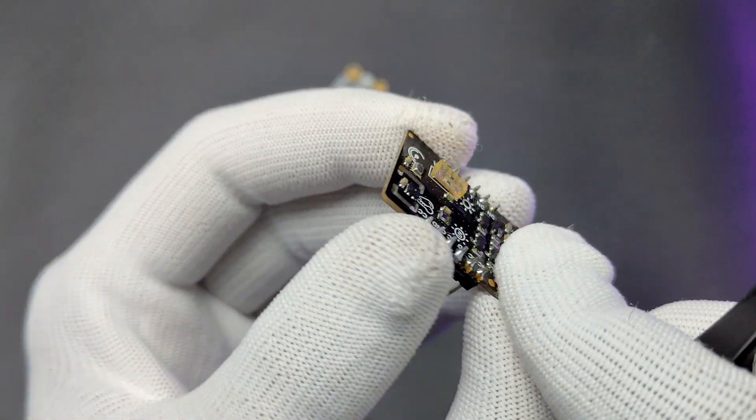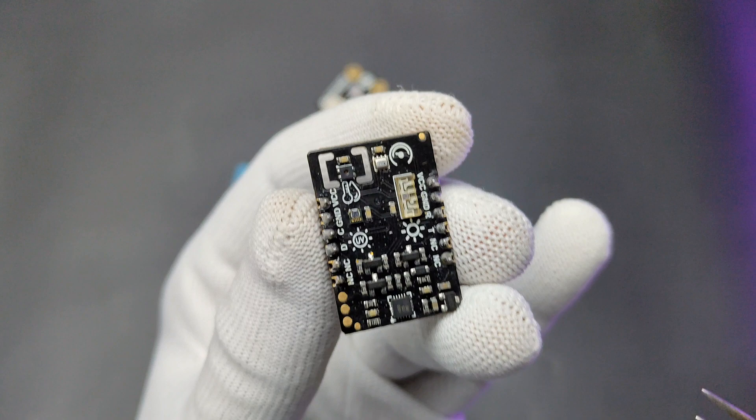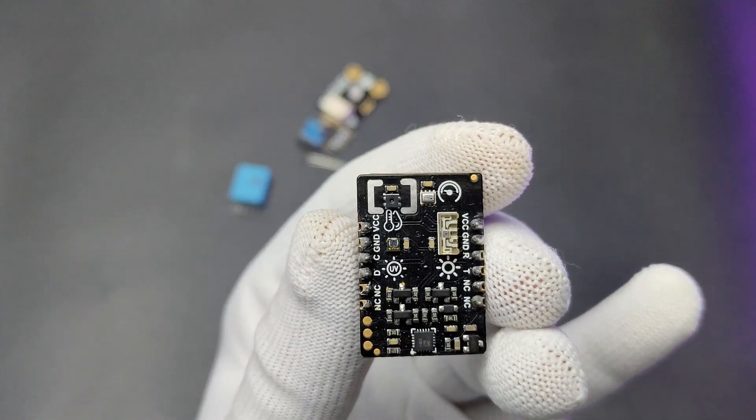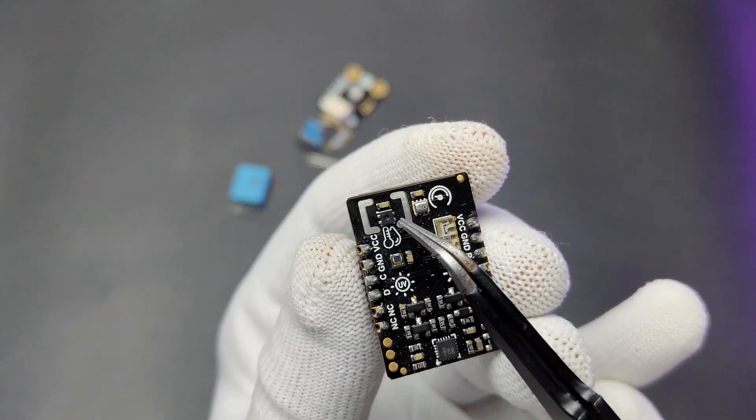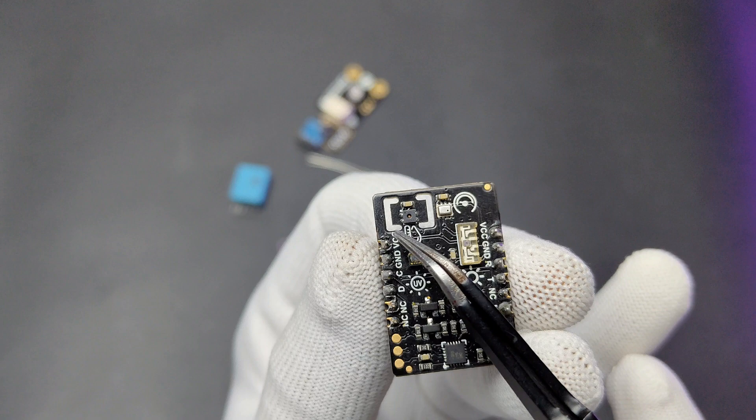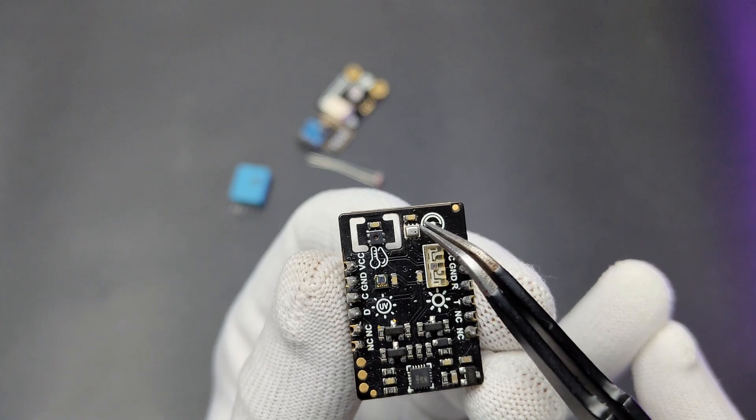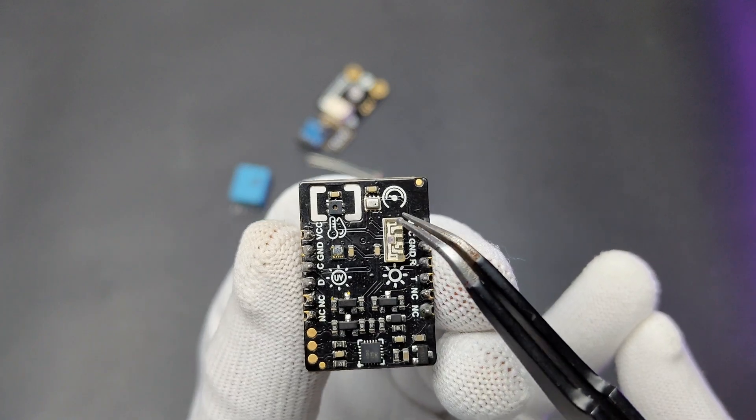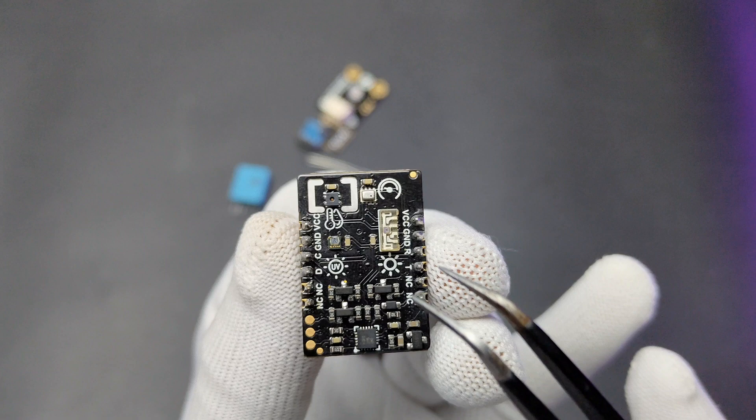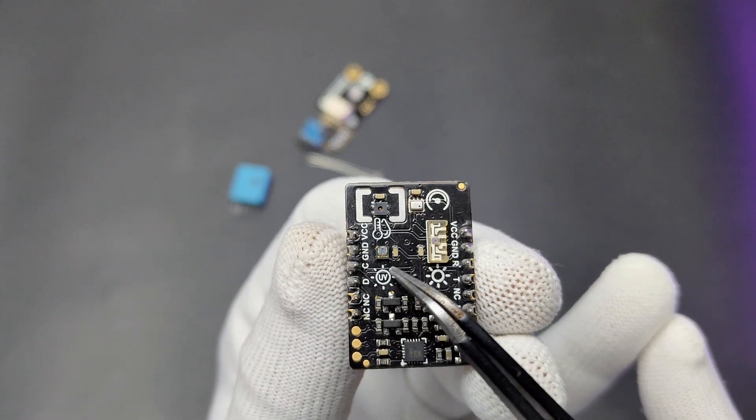Here is the sensor module. You can see the sensors are placed above the module. The module comes with SHTC3 temperature and humidity sensor, BMP280 biometric pressure sensor, VEML7700 ambient light sensor and ML8511 UV sensor.